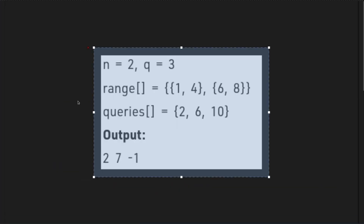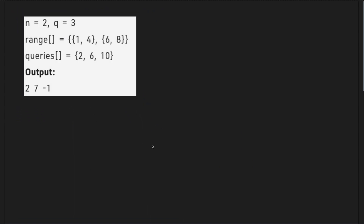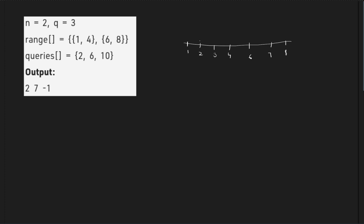Here we have the first sample test case. The first range is from 1 to 4, so you will have 1, 2, 3, 4 — the first four elements of the sequence. The second range is 6 to 8, so 5 will not be in the range. The next element is 6, then 7, then 8. The first query is 2, meaning you have to find the second smallest number, which is 2.